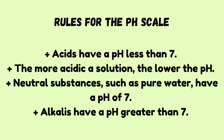Rules for the pH scale: Acids have a pH less than 7. The more acidic a solution, the lower the pH. Neutral substances such as pure water have a pH of 7. Alkalies have a pH greater than 7.